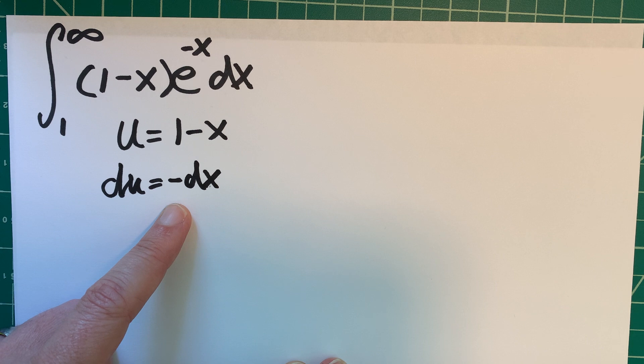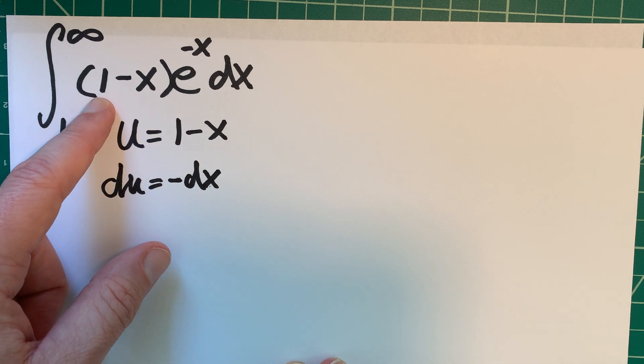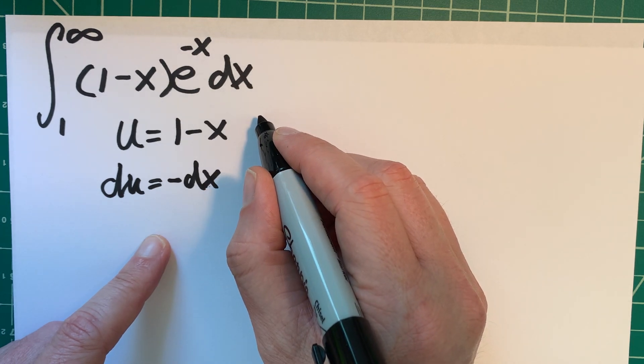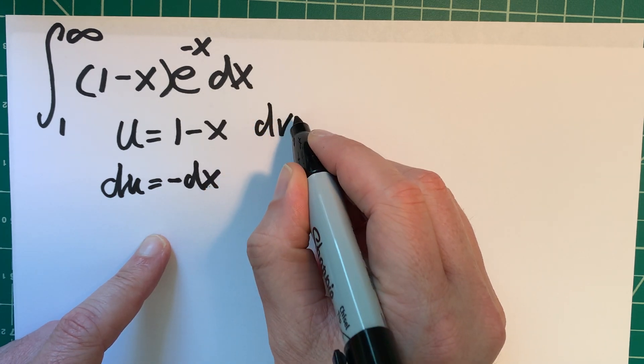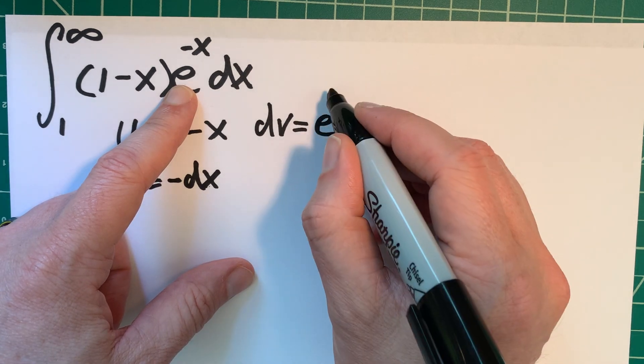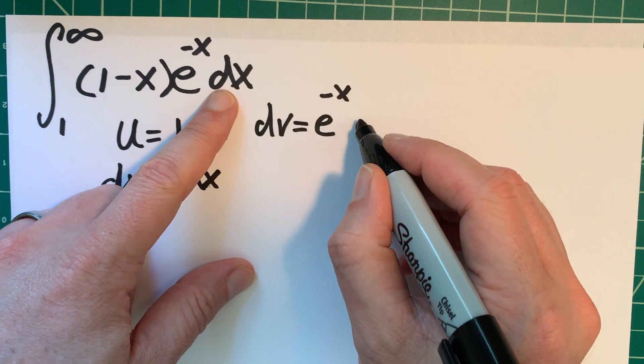And that seems like that would be simpler to work with than x minus 1 half x squared. So I think so far, so good. Let's see about dv. So dv, I think I'm going to choose e to the negative x dx.